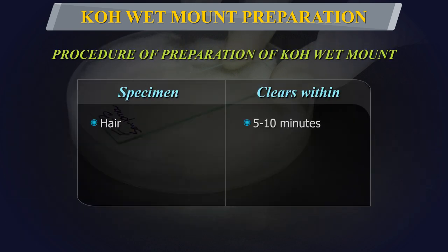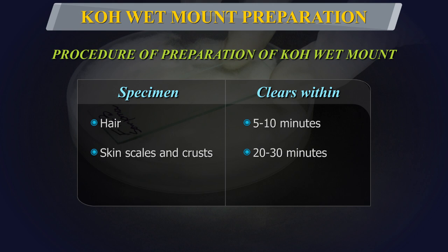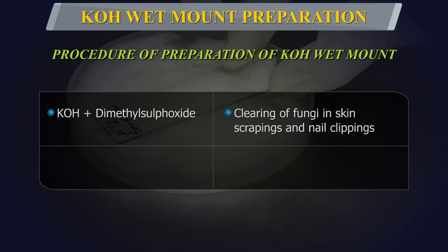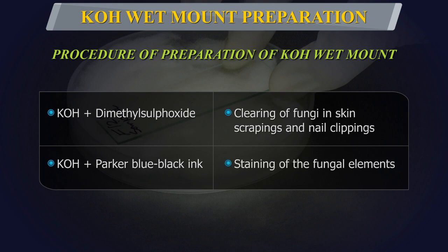Hair clears within 5-10 minutes. Skin scales and crusts usually take 20-30 minutes to clear. Nail clippings may take several hours to clear. Potassium hydroxide can also be supplemented with DMSO (dimethyl sulfoxide) to hasten the clearing, especially in skin scrapings and nail clippings. It can also be mixed with an equal part of Parker blue-black ink for staining of the fungal elements.